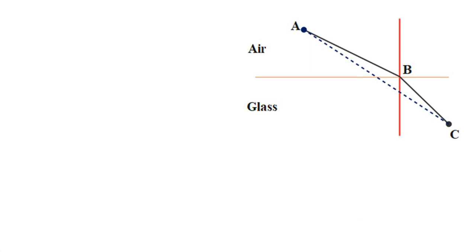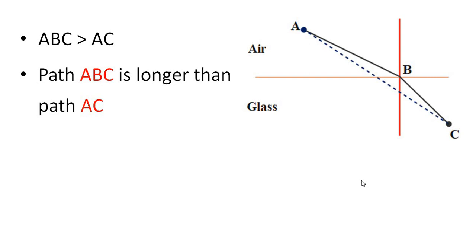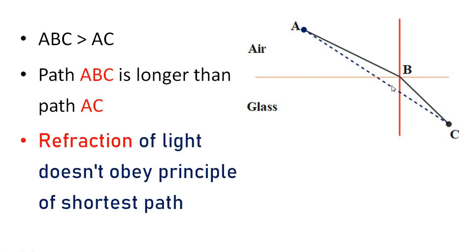Now let us discuss the case of two mediums. Light travels from point A through one medium, crosses the boundary at point B, and reaches point C in another medium. In this case, path ABC is greater than path AC — meaning path ABC is longer than the direct path AC. Therefore, refraction of light does not obey the principle of shortest path.